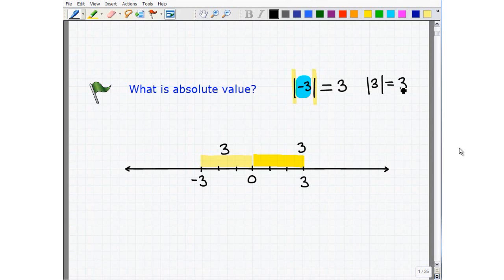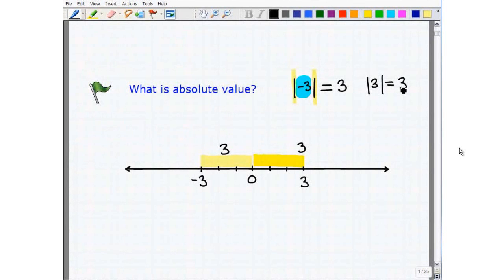So the definition of absolute value, the main concept that I want you to walk away from and keep with you, is that absolute value is a number's distance away from zero.